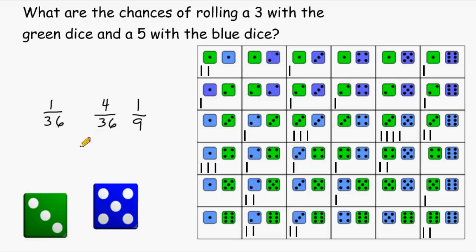Theoretical probability is just how many times you can expect something to occur based on its sample space without actually performing the action. And the experimental probability is just the probability based on the actual results. For us, we rolled a green 3 and a blue 5 4 times out of 36, which is 1 ninth.